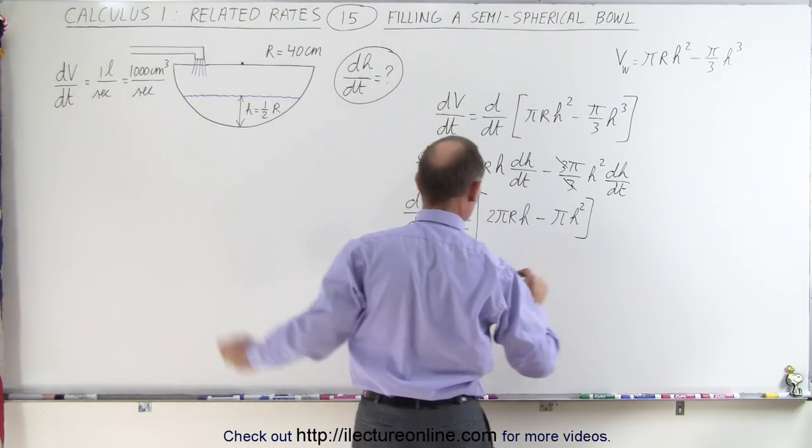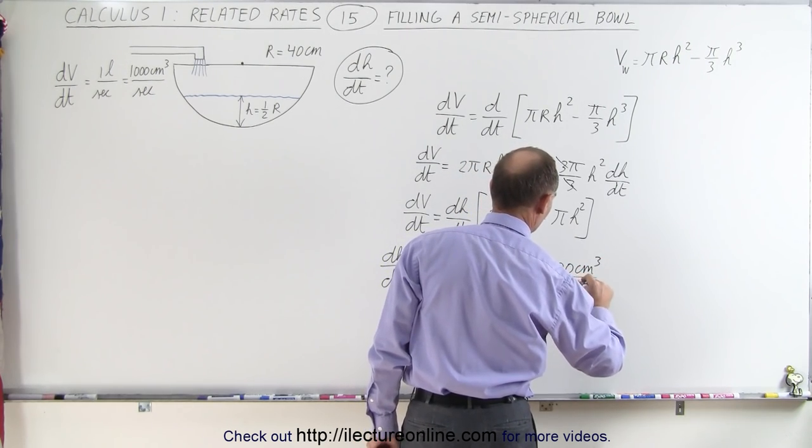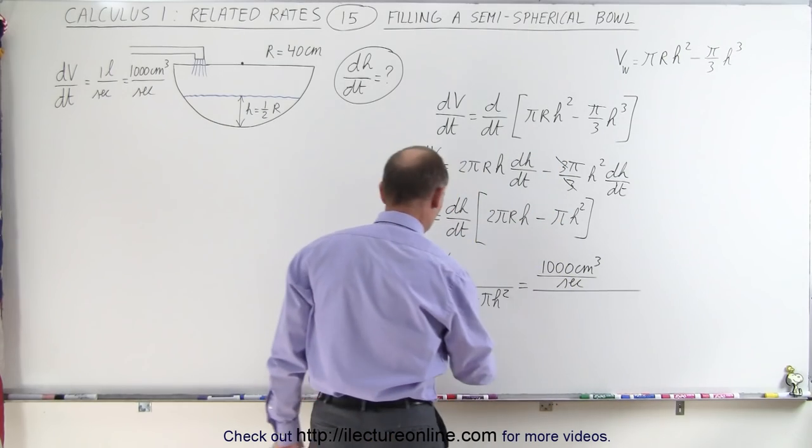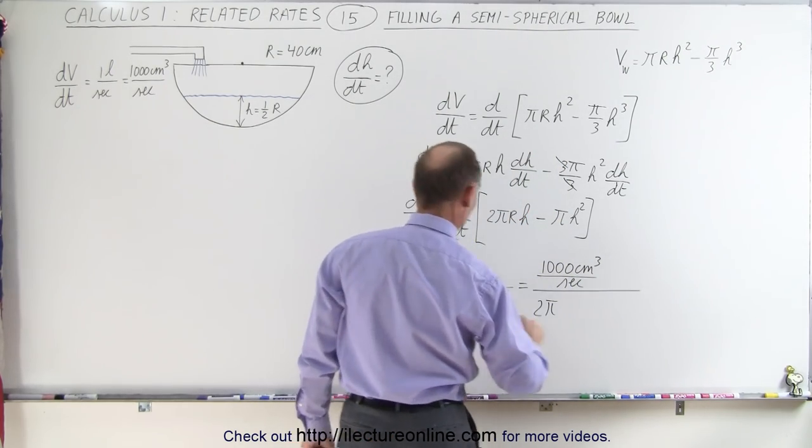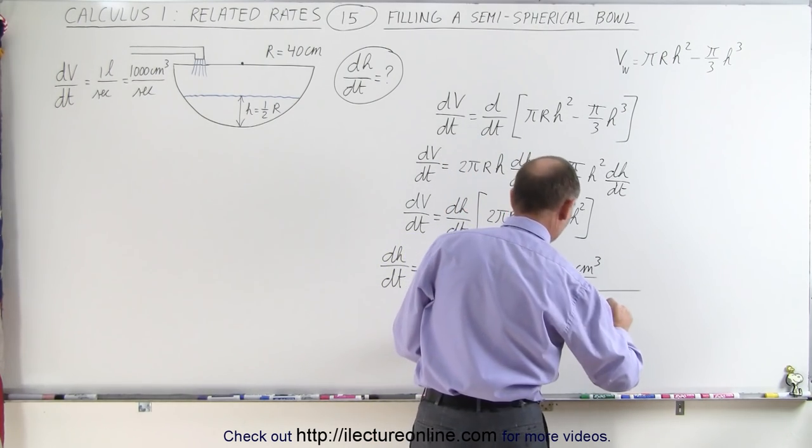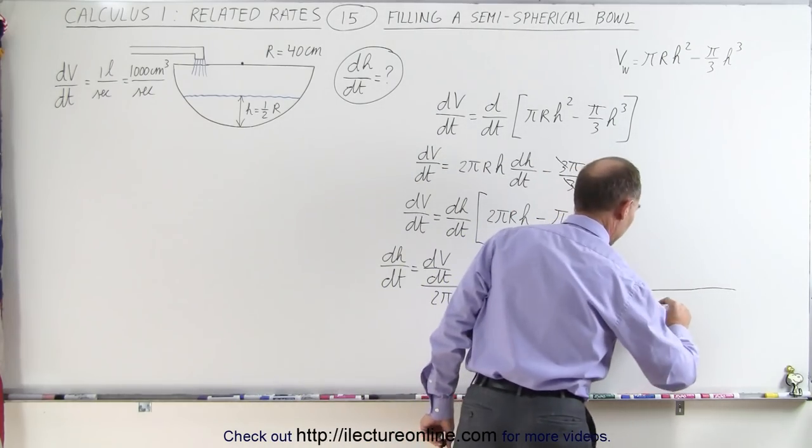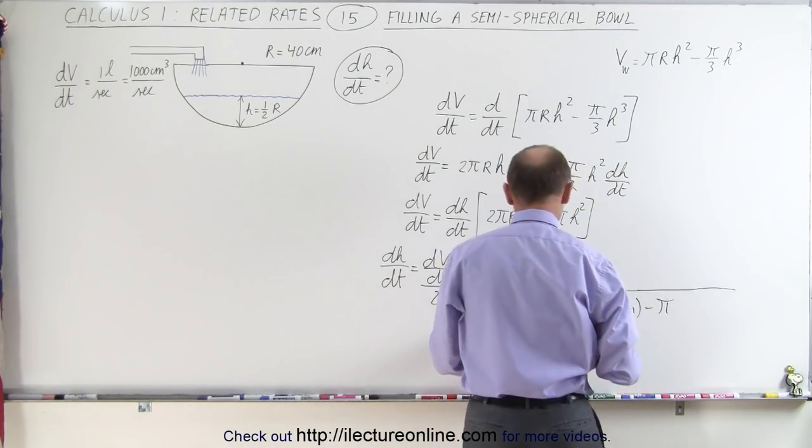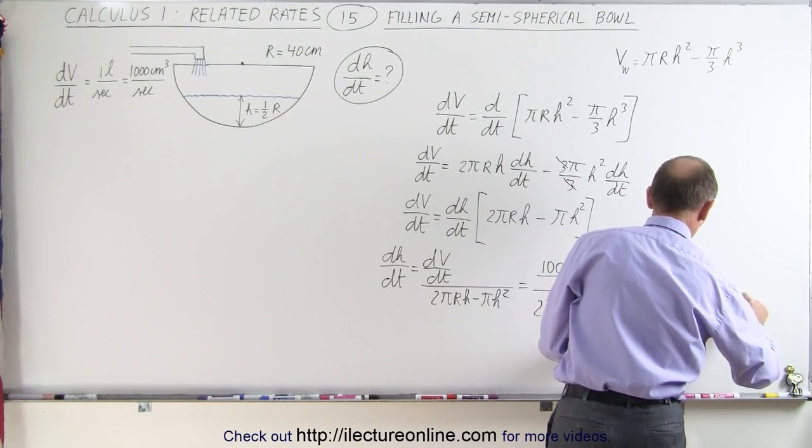dv dt is 1,000 cubic centimeters per second, divided by 2 pi times the radius, which is 40 centimeters, times h, which is half of that, 20 centimeters, minus pi times h squared, h would be 20 centimeters, and we have to square that.